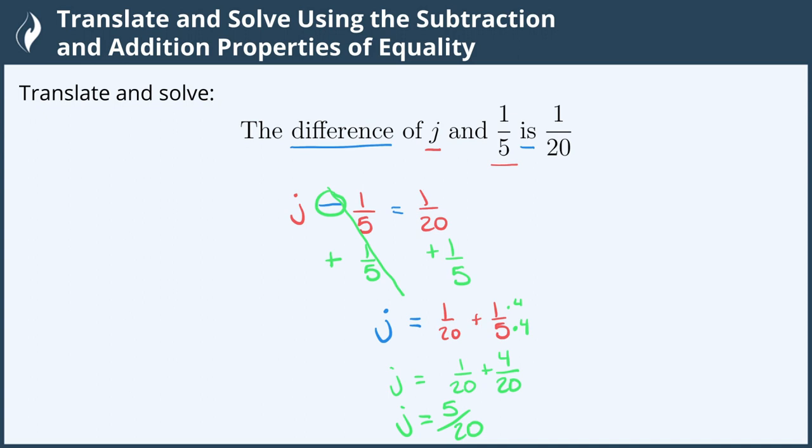And now we need to simplify. Both numerator and denominator are divisible by five which gives us five divided by five is one, and twenty divided by five is four. So we can say j equals one-fourth. And now we're all done.